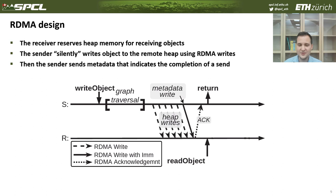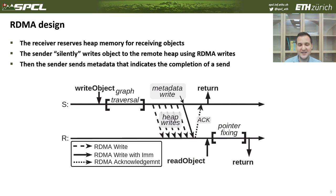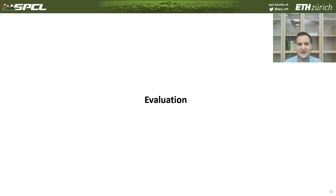At some point, the receiver calls read_object and performs pointer fixing, which fixes the pointers and materializes the received object, then the application gets a pointer to the first received object. In the paper, we explain more complicated cases when the receiver has little memory for receiving the object and cases when it was not ready to receive. Please read the full paper to understand all the corner cases.